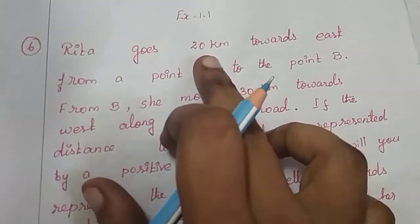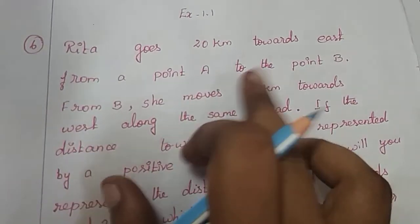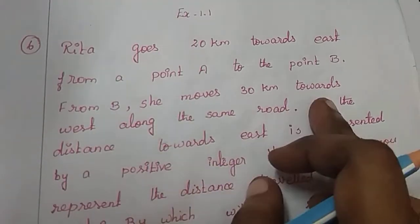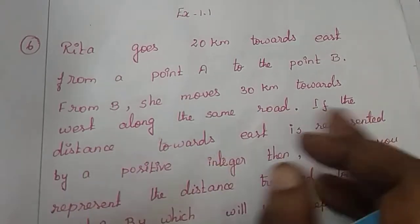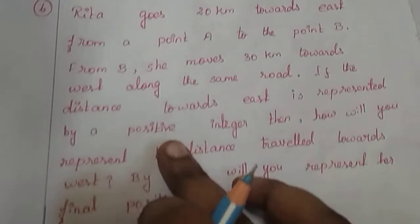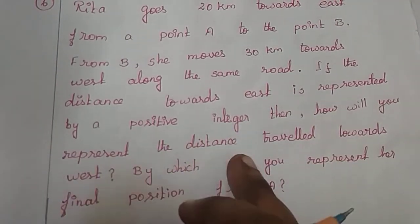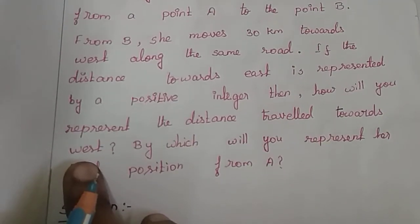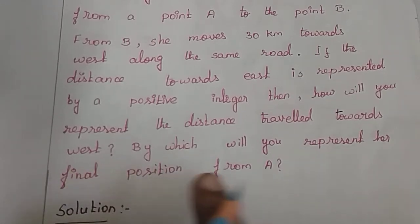Rita goes 20 kilometers towards east from a point A to the point B. From B, she moves 30 kilometers towards west along the same road. If the distance towards east is represented by a positive integer, then how will you represent the distance travelled towards west, and how will you represent her final position from A?